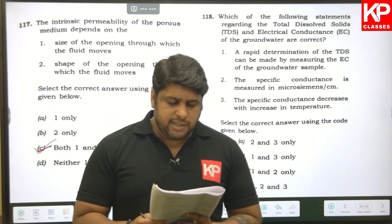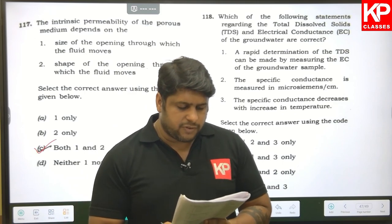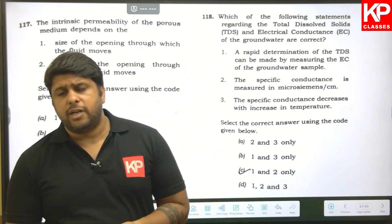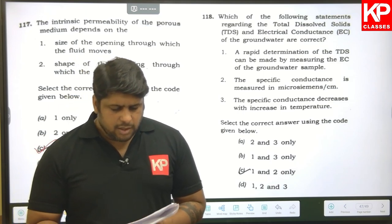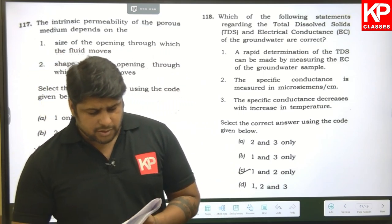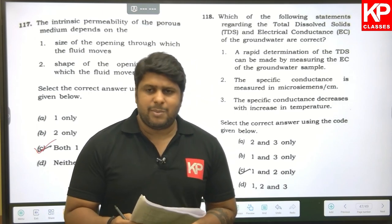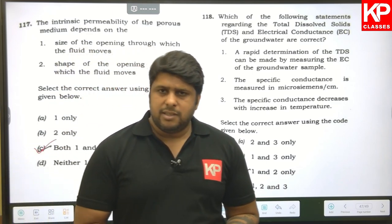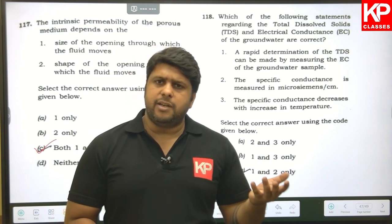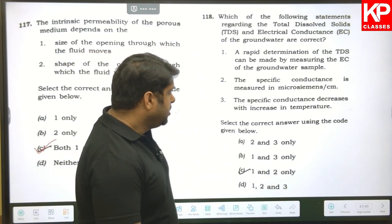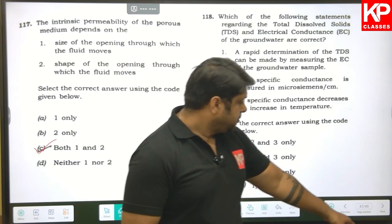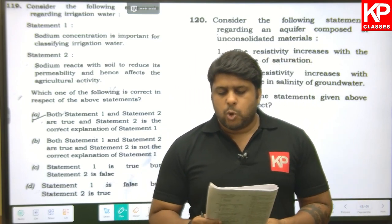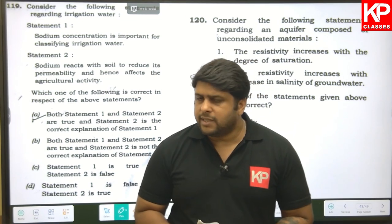Question one hundred and nineteen: regarding TDS and electrical conductance of groundwater — a rapid determination of TDS can be made by measuring the electrical conductance (correct, because more ions means higher conductance). The specific conductance is measured in microsiemens per centimetre (correct). The specific conductance decreases with increase in temperature — this is wrong, because conductivity increases with temperature. So only statements one and two are right.